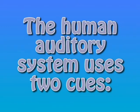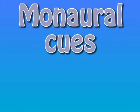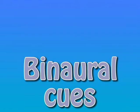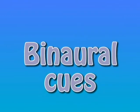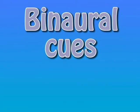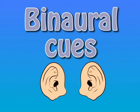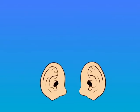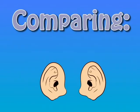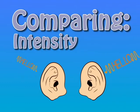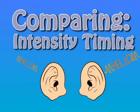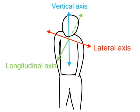The human auditory system uses two types of cues to achieve sound localization: monaural cues and binaural cues. This video will focus on binaural, or two-eared cues. Binaural cues work by comparing the difference in the intensity or the timing between each ear, and these cues work specifically to localize sound along a horizontal, lateral axis.